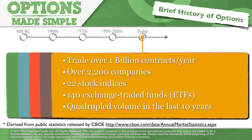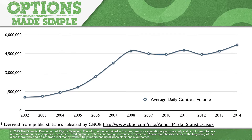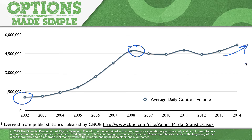There are now over 2,200 companies with tradeable options. Starting from just 16 companies in 1973, today there are over 2,200, with 22 stock indexes and over 140 exchange-traded funds. Volume has quadrupled over the last 10 years. Looking at the average daily contract volume chart: back in 2002, average daily volume was just over 1 million contracts. By 2008, that had quadrupled to around 5 million contracts, and continuing into 2014 and beyond it just keeps growing.